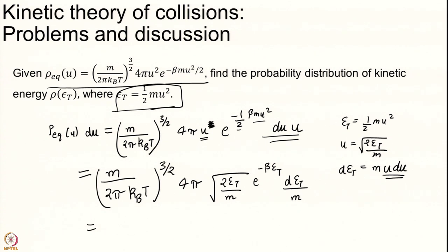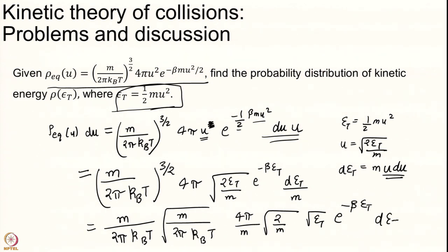I can simplify this a little bit. Again more you practice more you will become comfortable on how to do these kind of tricks. This comes only and only with practice no alternate. You cannot just watch these lecture series and become comfortable with these 4 pi over m root 2 over m root epsilon e to the power of minus beta epsilon d epsilon.